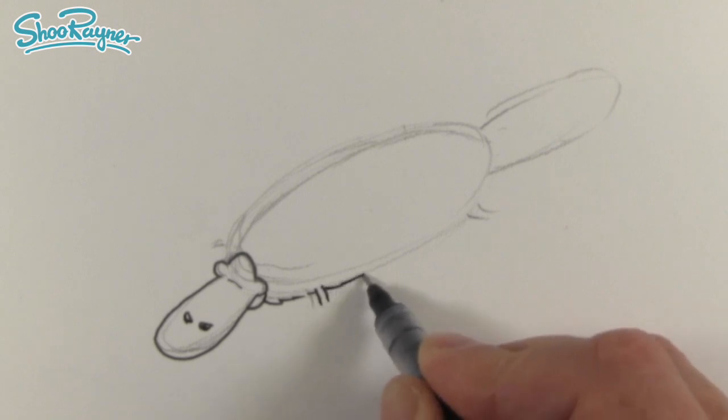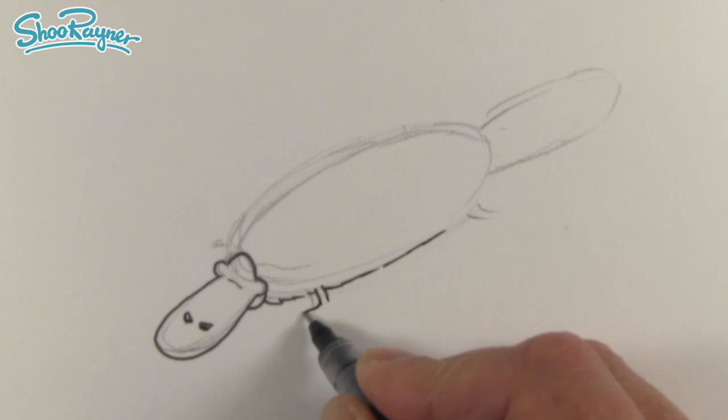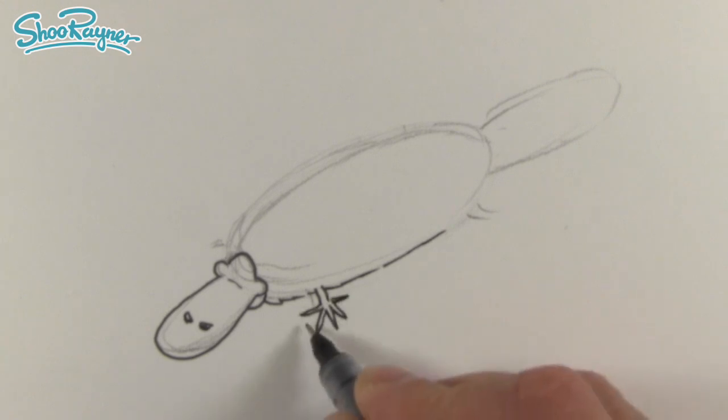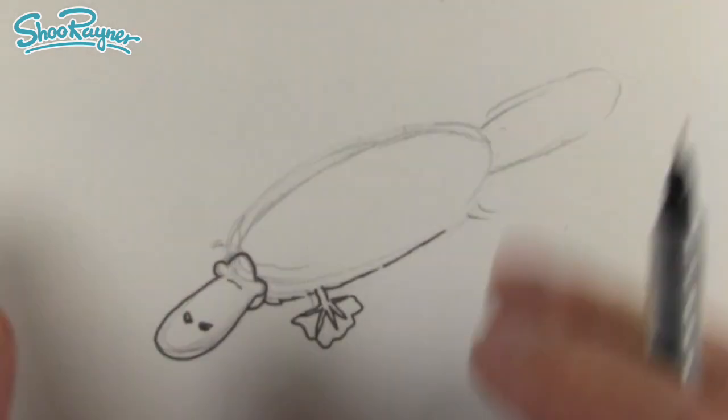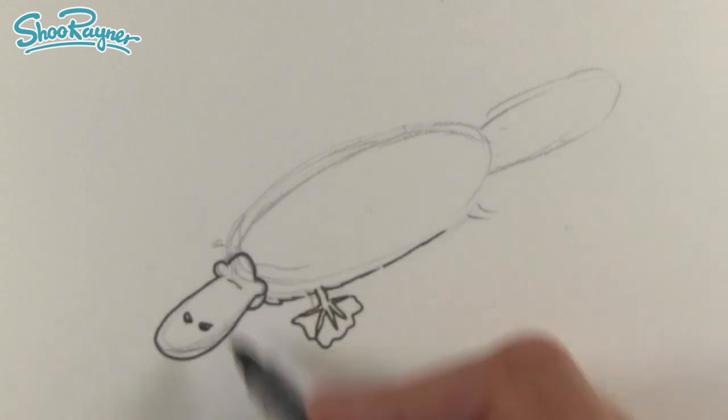I'm just going to bring that out there like that and then we're going to go one two three four five like that. These are not really webbed, they've just got these little hands with these leathery flaps kind of attached to them.